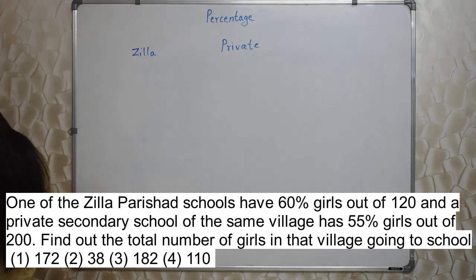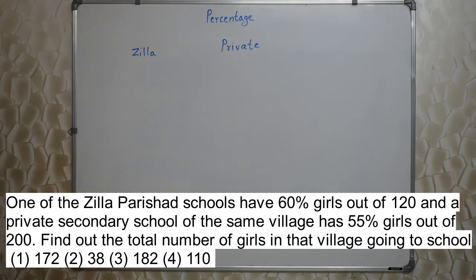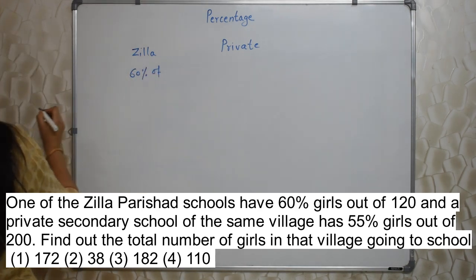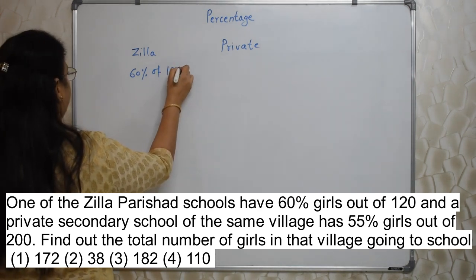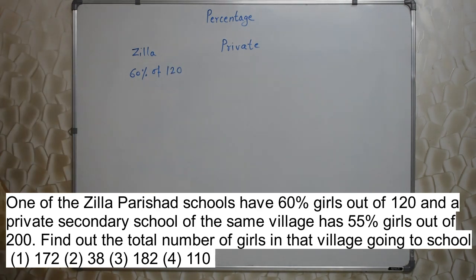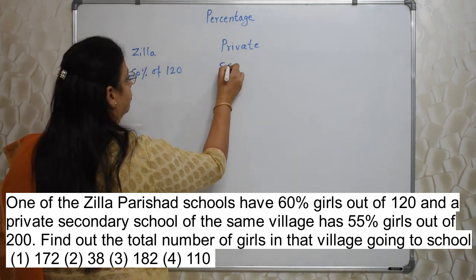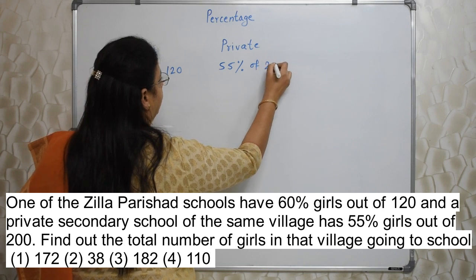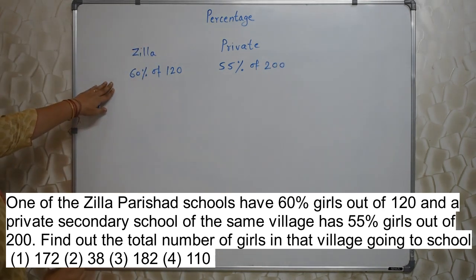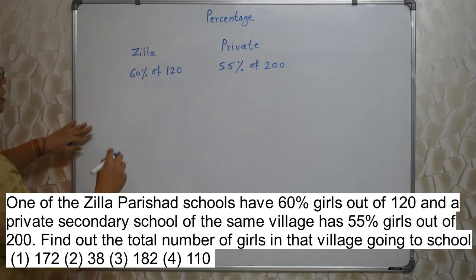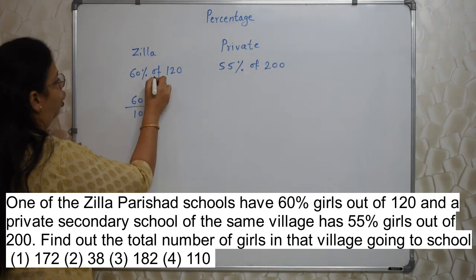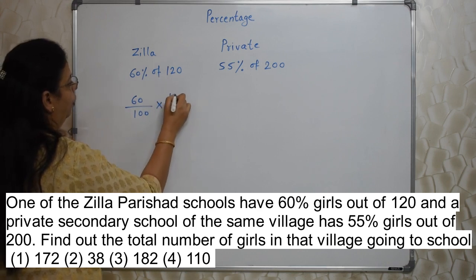Find out the total number of girls in that village going to school. They have given the percentage: Jila Parishat is 60% of 120 and private 55% of 200. 60% means 60 upon 100, and 'of' means multiply.